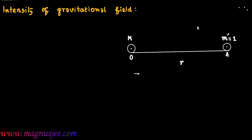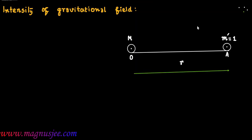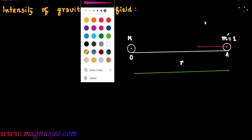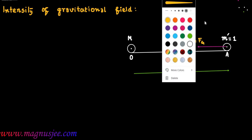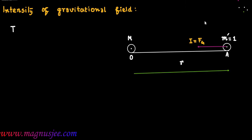R is the distance of the test body of unit mass M' from the given body. This test body of unit mass experiences a gravitational pull Fg due to the given body of mass capital M. In this case, the gravitational force of attraction Fg is equal to I, the intensity of gravitational field.